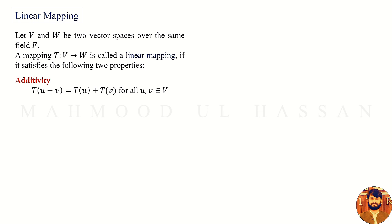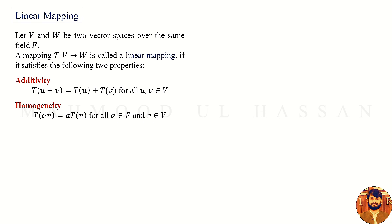The additivity property means that if we take two vectors from the vector space V and apply the mapping T on their sum, that is T of U plus V, this can be written as T of U plus T of V. This property must hold for all vectors in vector space V.